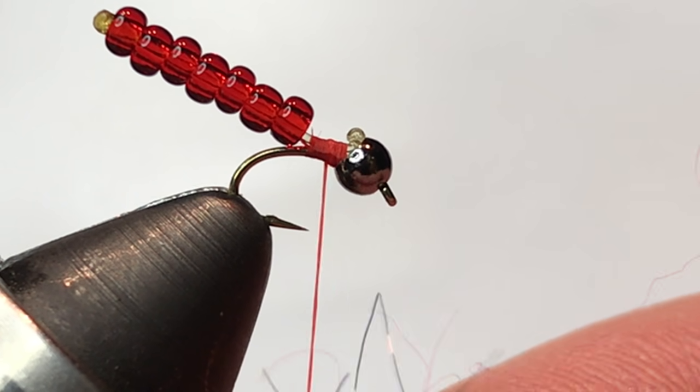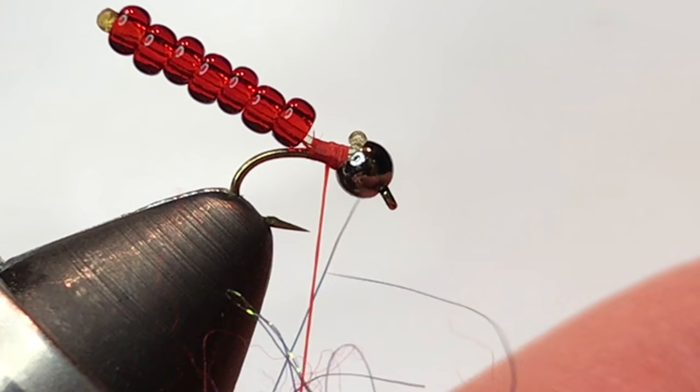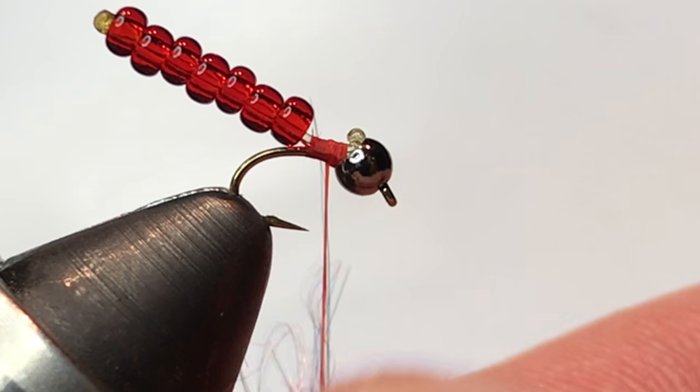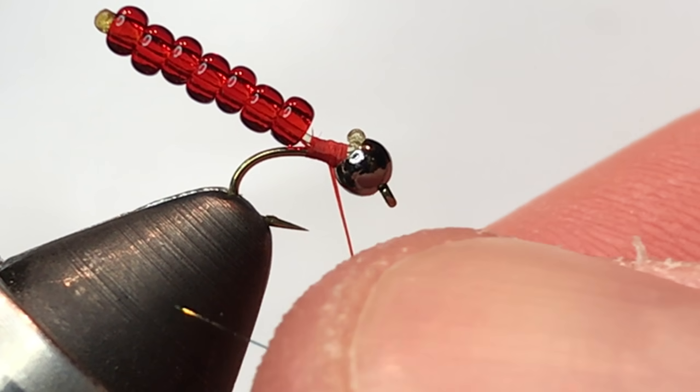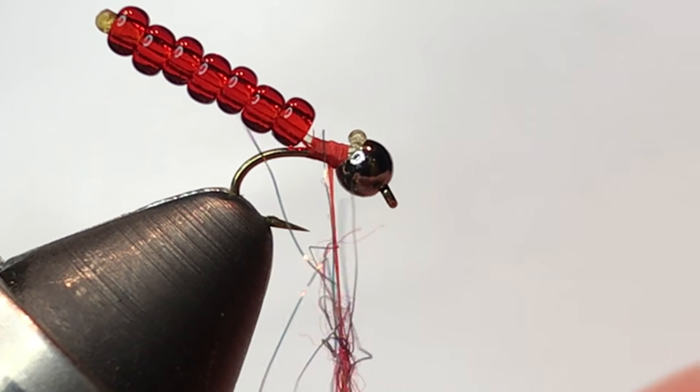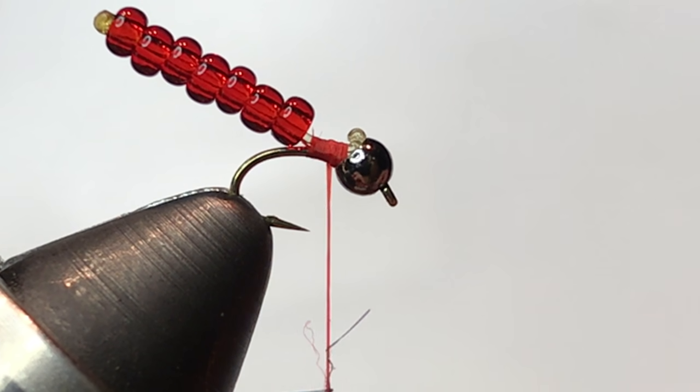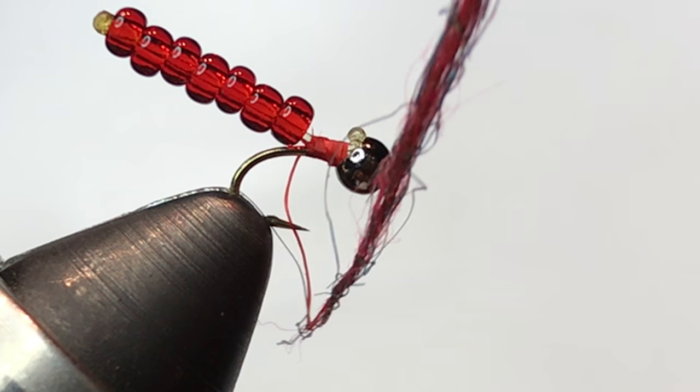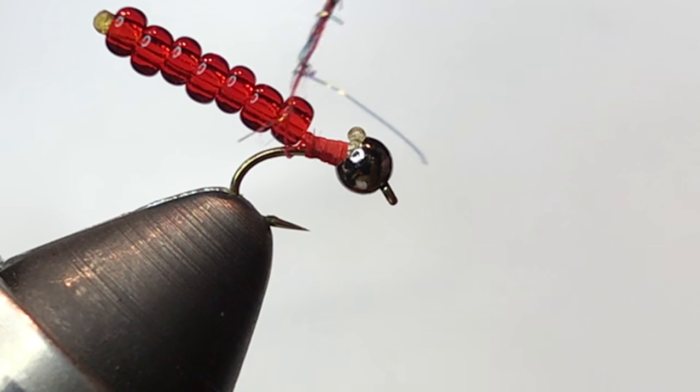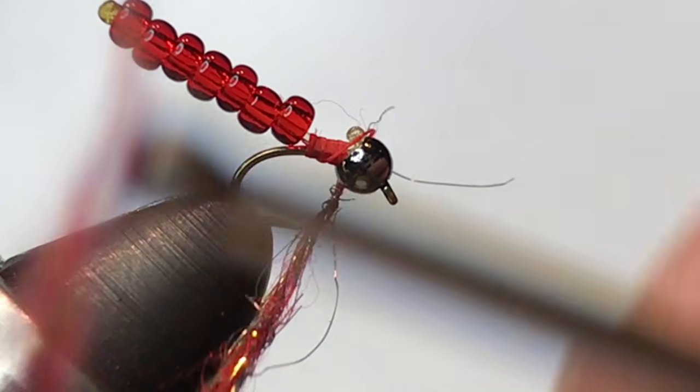Create a very small dubbing noodle with your dubbing of choice. Now wrap your dubbing around to make a nice tight little thorax.